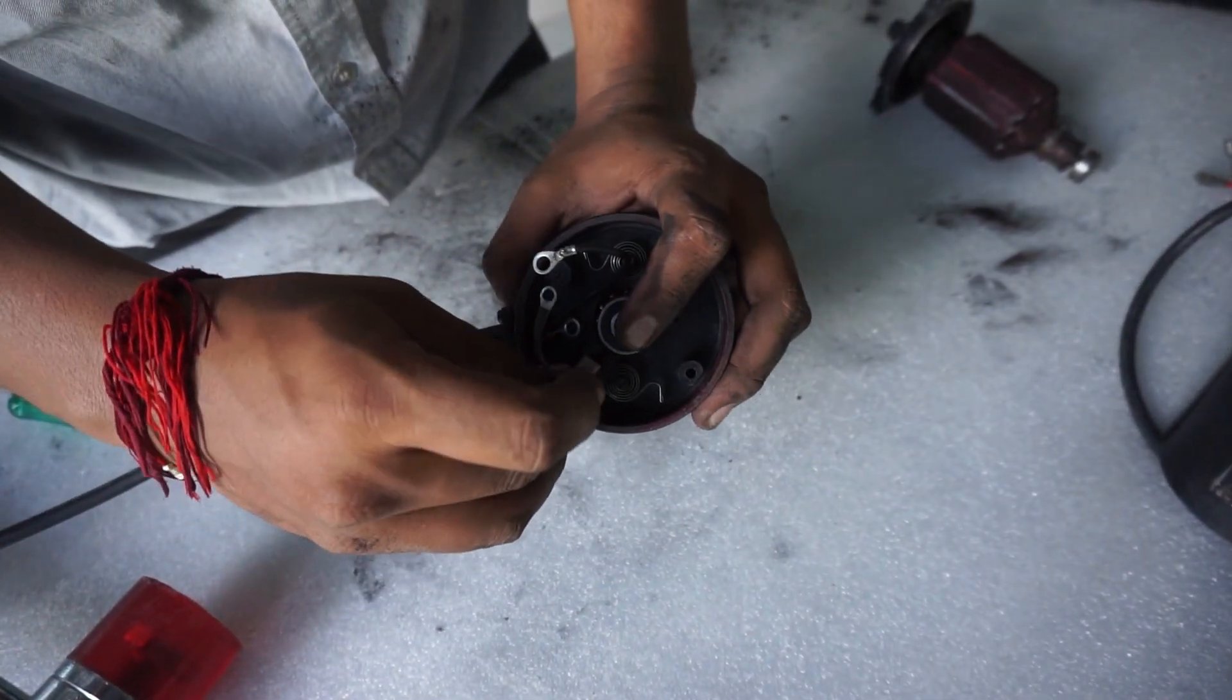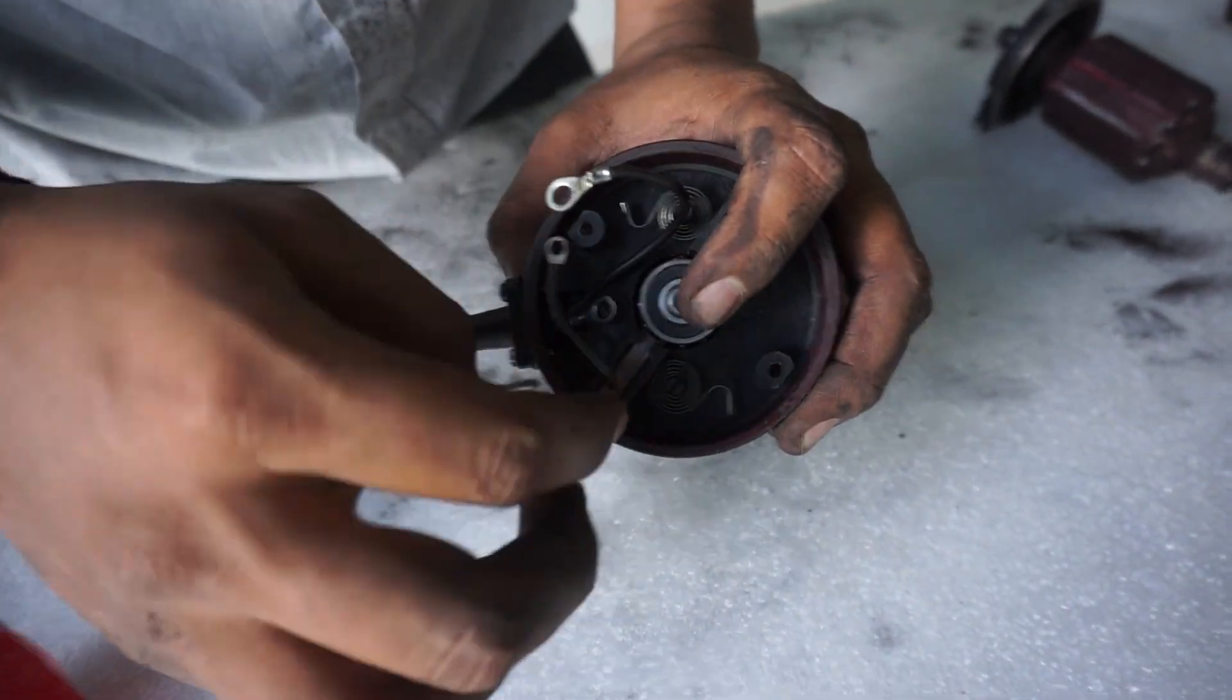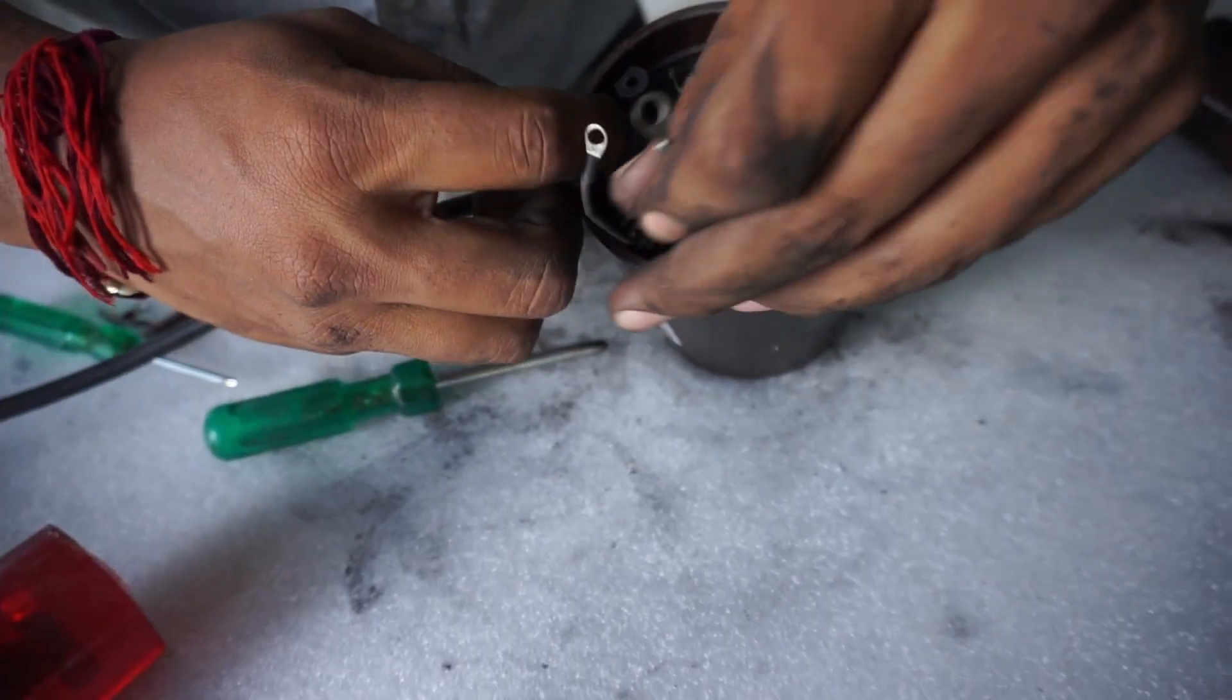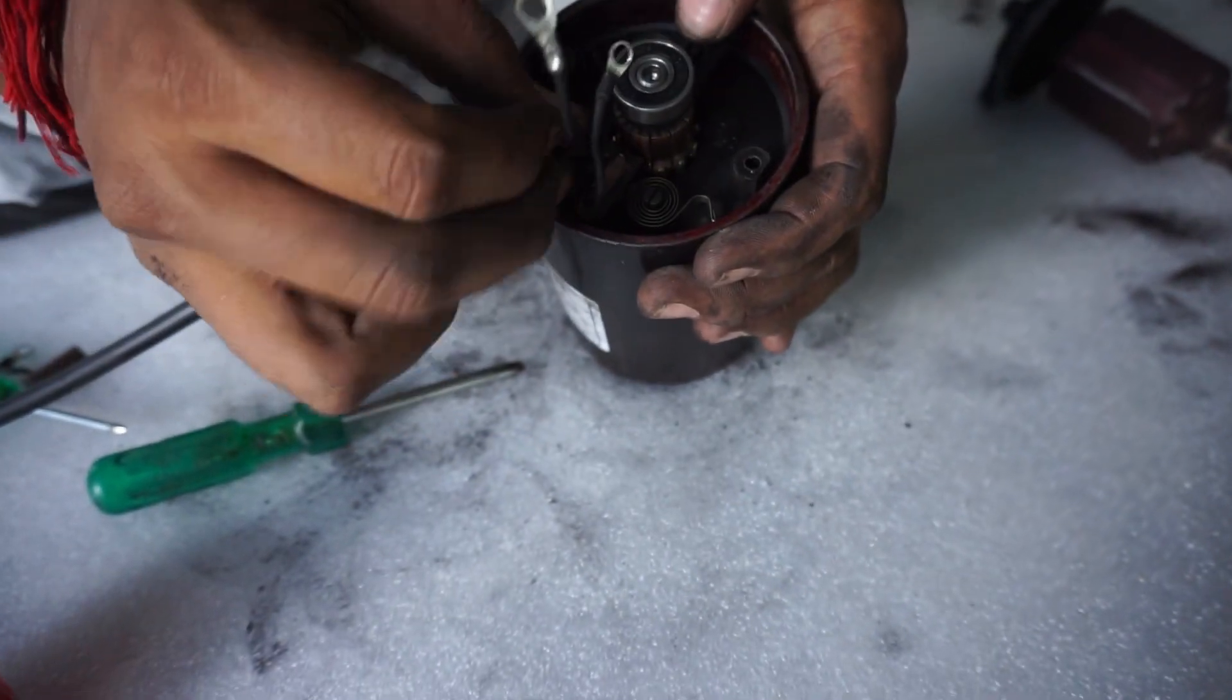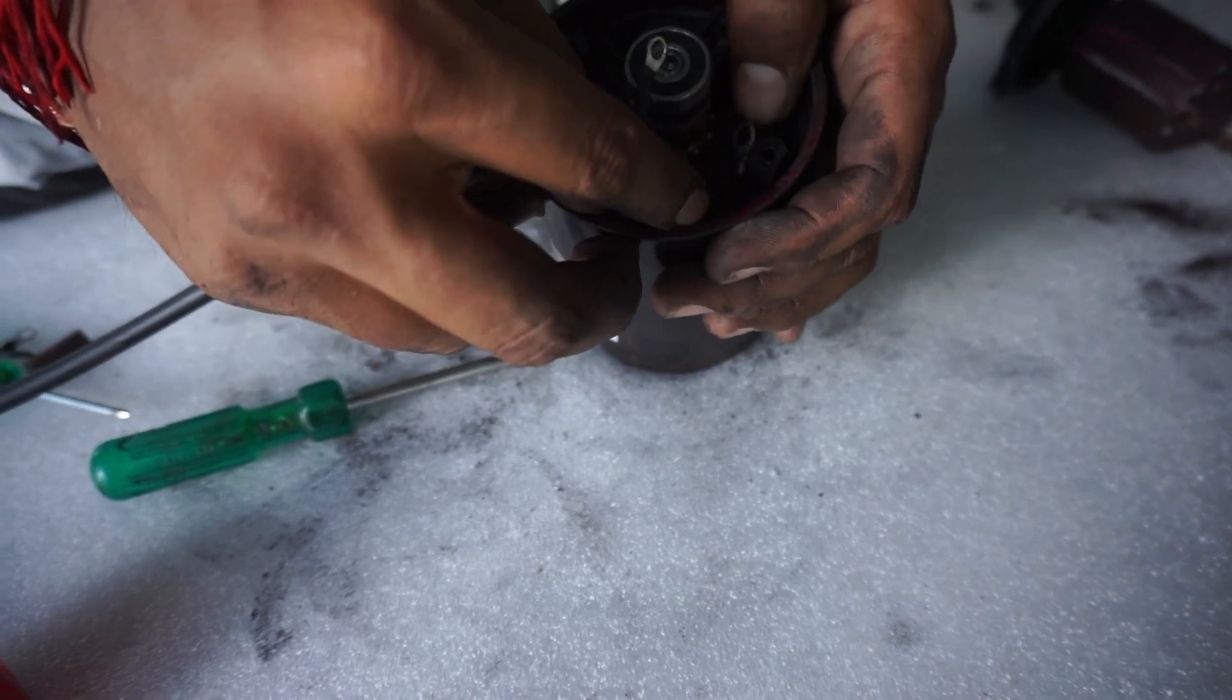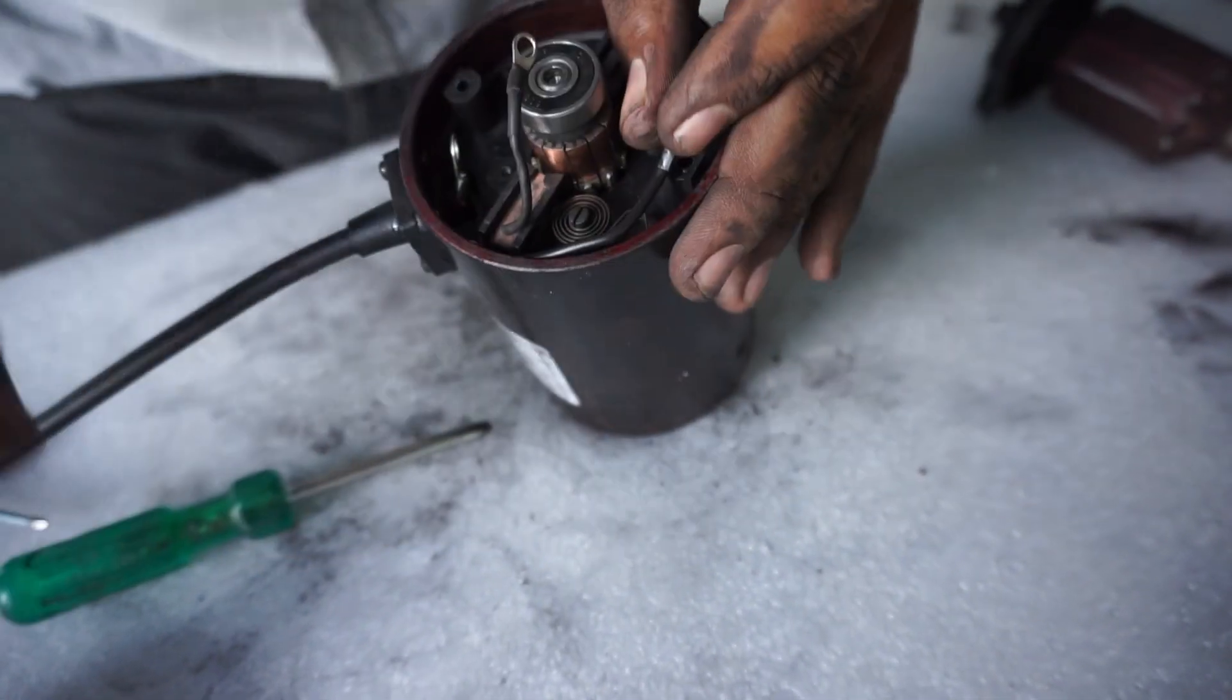Place the carbon brushes back and route the positive and negative wires to their connection points. The positive wire is close to the wire entry point. While the negative wire needs to be routed around the edge of the plate to the other connection point. Make sure the negative wire does not restrict the movement of the carbon brush.